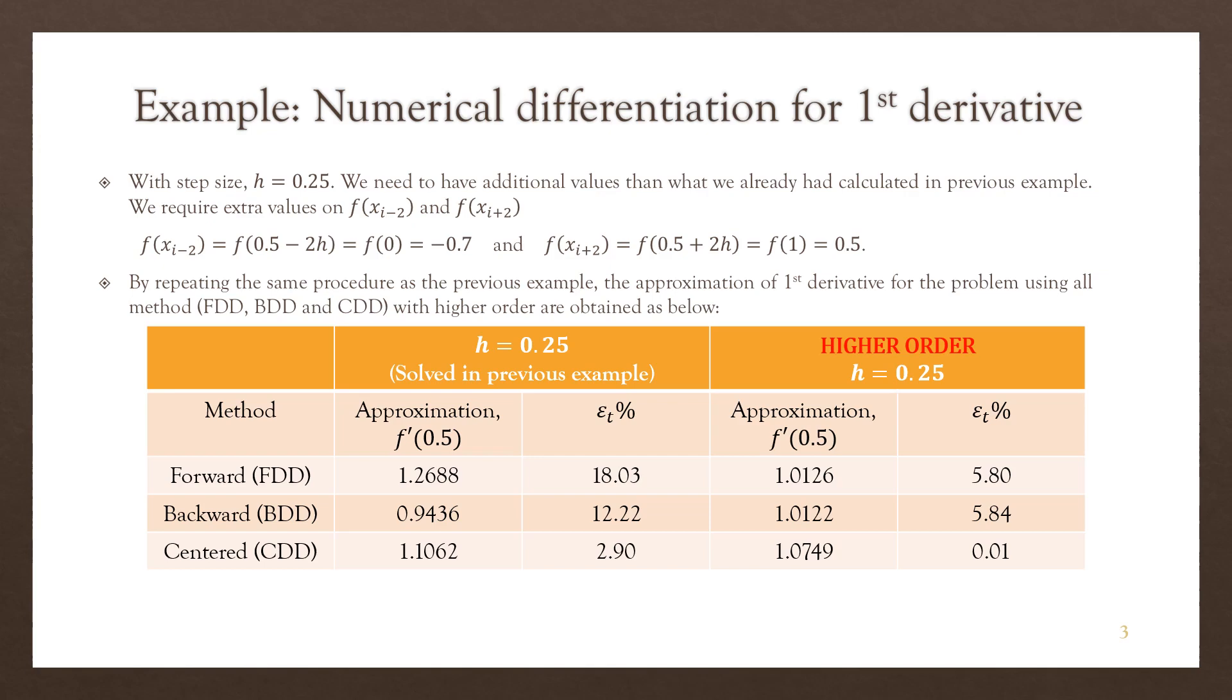For FDD, you can see that the high order produced a much lower true error. So in the lower order is 18.03%, but in the higher order, FDD gives 5.8%. For BDD, a similar pattern. For lower order approximation, we have 12.22% of true error. So the size of the true error is quite similar between FDD and BDD in the higher order formulation.